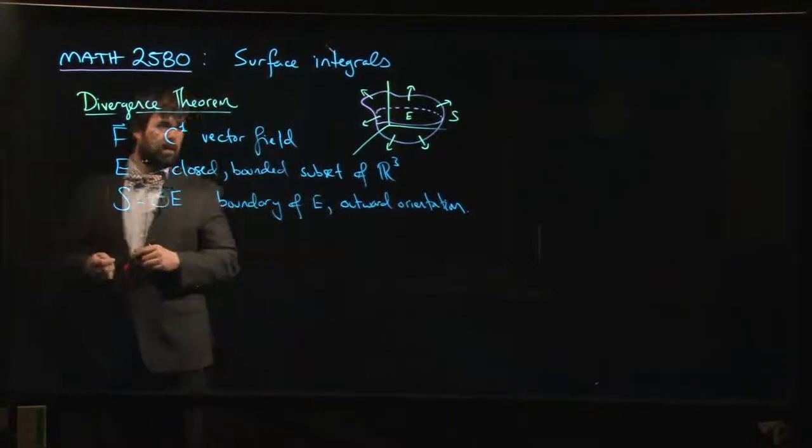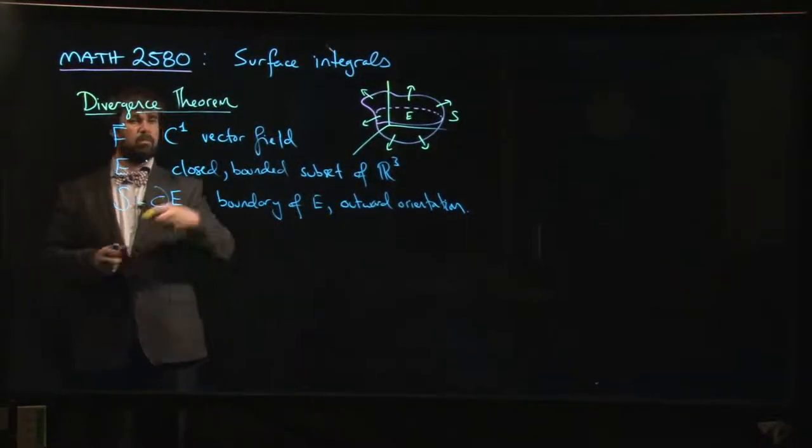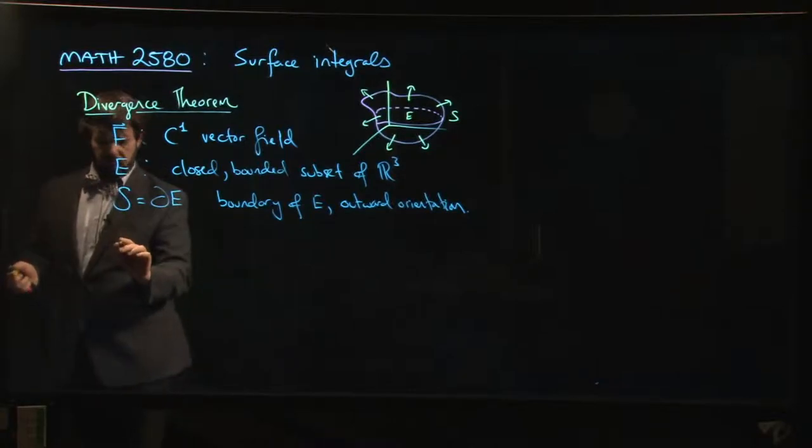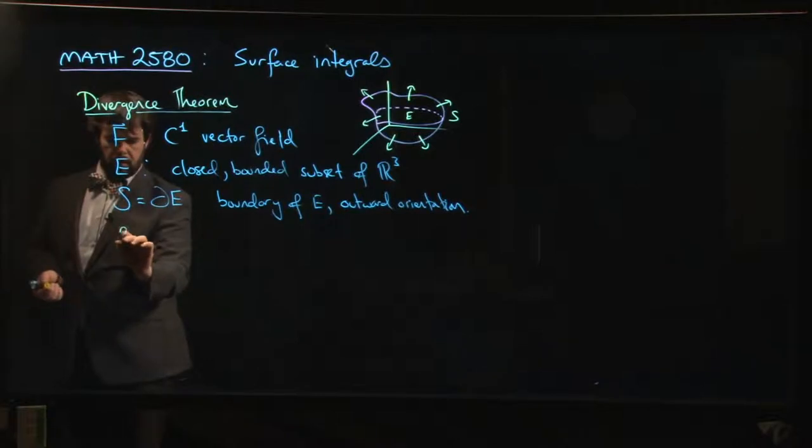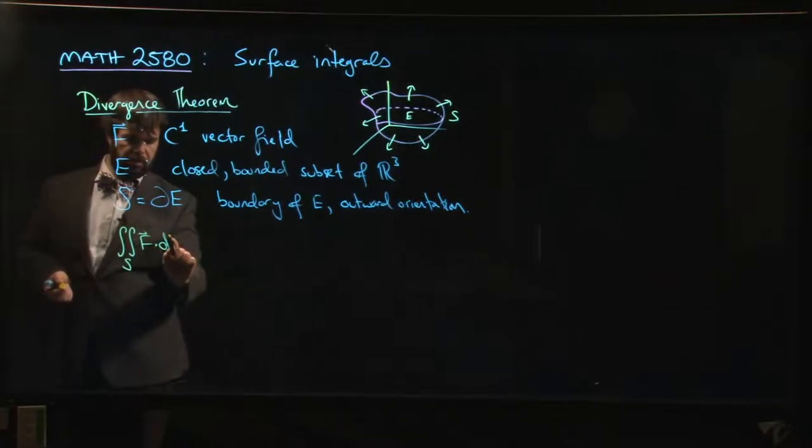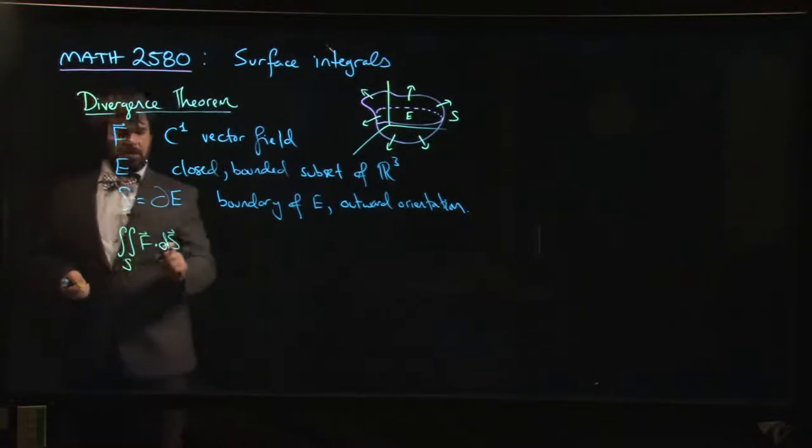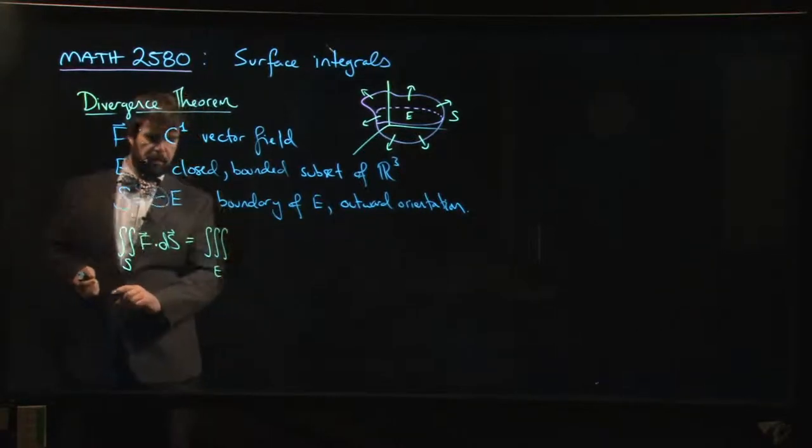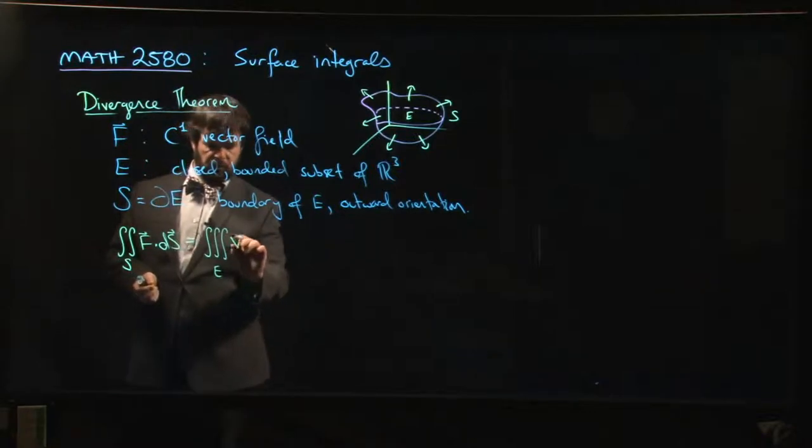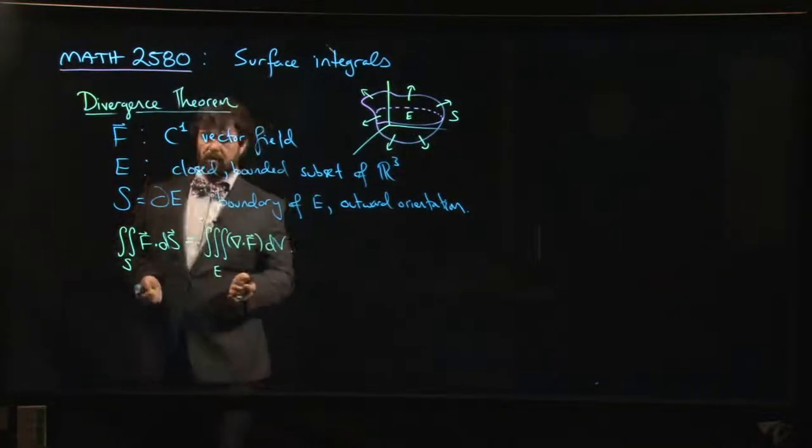So with these definitions, we can state the Divergence Theorem, right? So the Divergence Theorem says that for a C1 vector field defined over some closed bounded subset of R³, it says that the integral over the boundary of that vector field, so the flux across the boundary if you like, is equal to the integral over E of the divergence, okay? That's the Divergence Theorem.